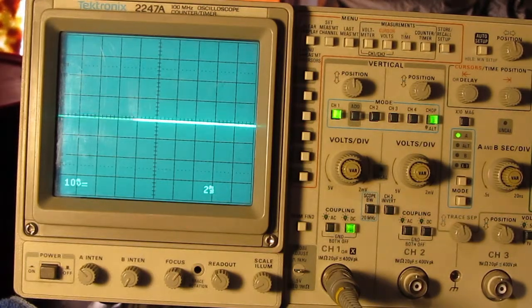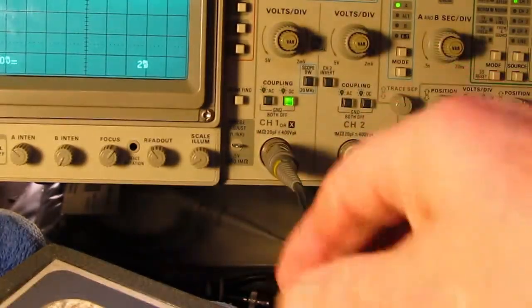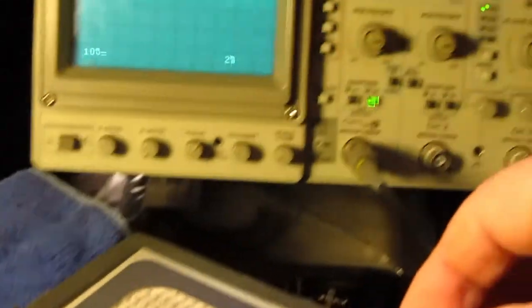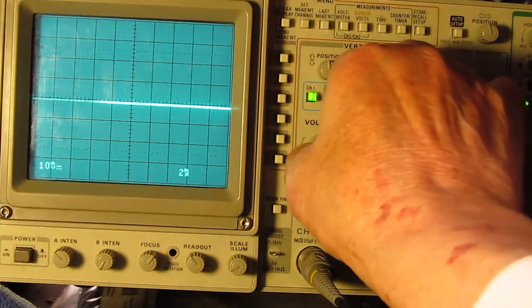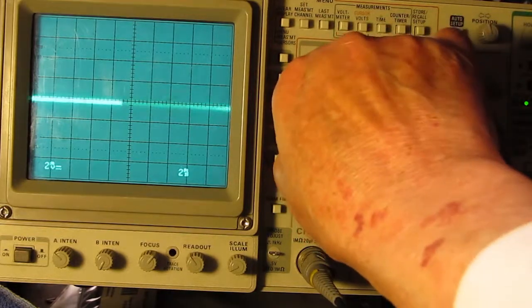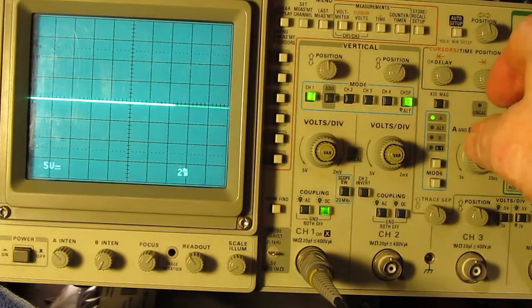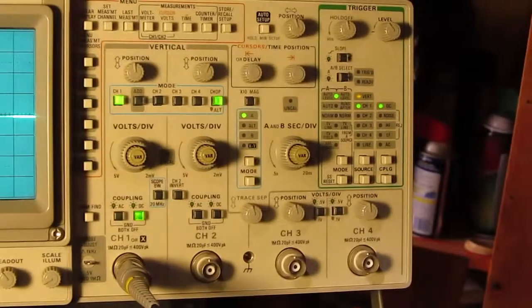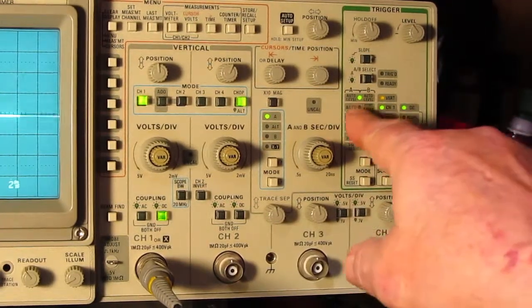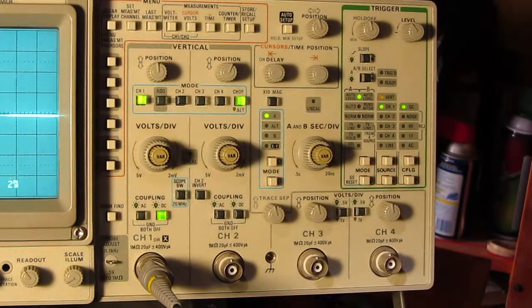Previously we hooked up the lead from this signal generator to the probe, which is on channel one here. This probe is connected here and goes to channel one. We're in DC and I've got the voltage division set for 10 millivolts and we're going to bump that up just for safety to the machine here and make it the maximum five volts. And then the time is set for two milliseconds, that's right here. We can leave that alone. AB select is set for auto level, vertical is channel one, and then we're on DC. And that's basically all the settings.